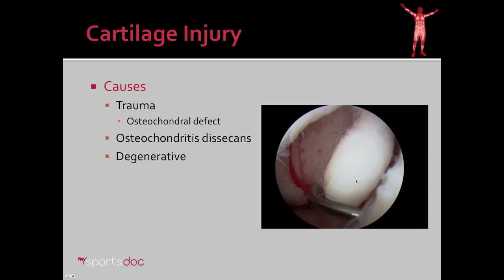Causes of injury to cartilage: obviously you can have trauma. If a force sustained to the knee is greater than its ability to withstand it, you'll have a fracture. The bone underneath is fractured and the cartilage is separated from it — that's called an osteochondral defect. Osteo meaning bone, chondral meaning cartilage, and defect meaning the fracture. A lesser known but very common condition is osteochondritis dissecans, where the bone underneath the cartilage actually dies first, and then with pressure on the cartilage above, the cartilage collapses into it or breaks off. This is extremely common, especially in adolescents.